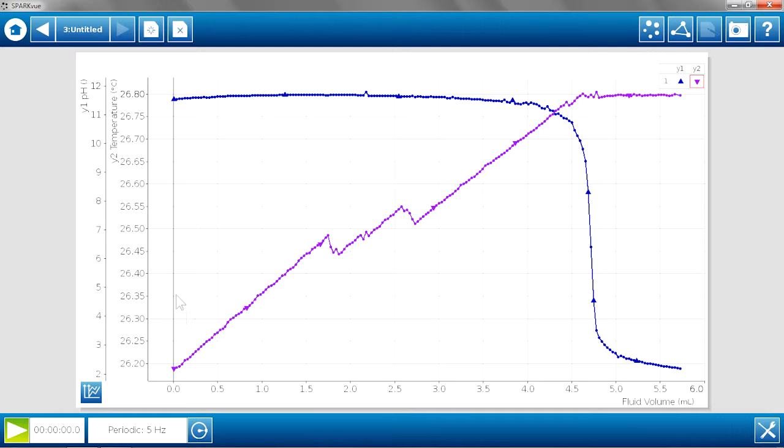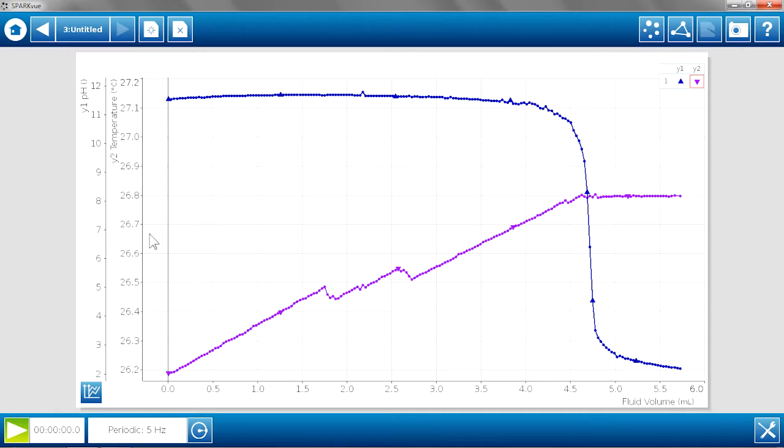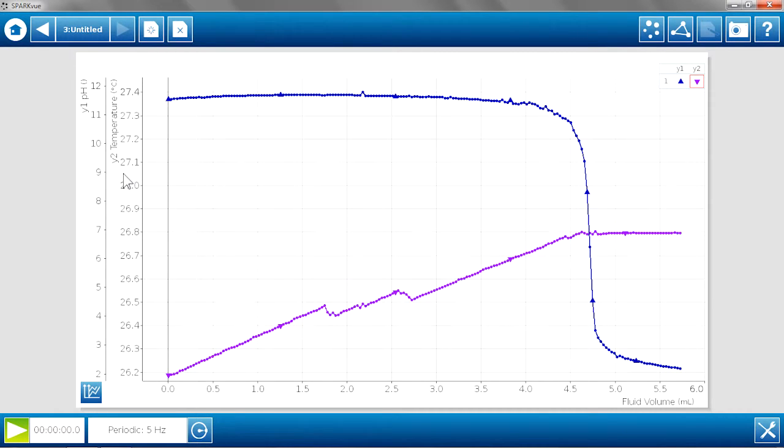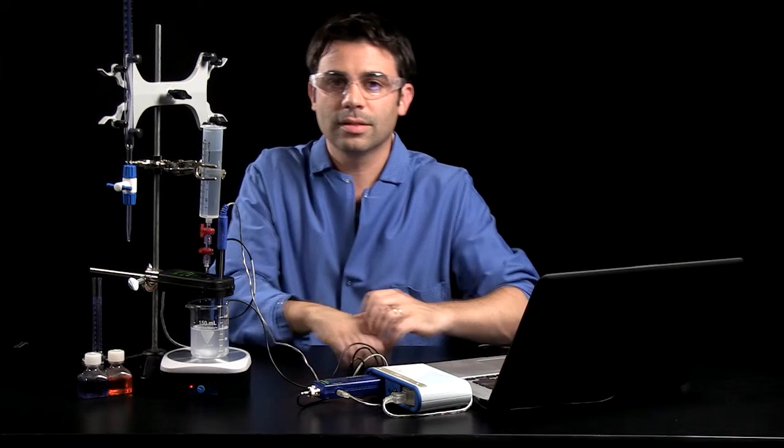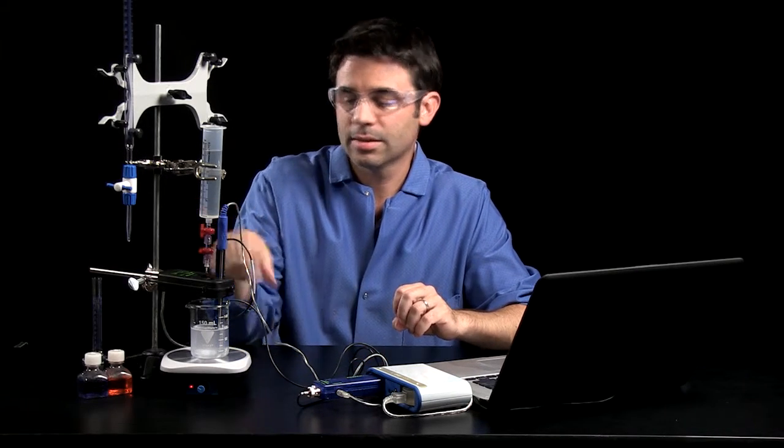And here we have the temperature steadily increasing as the reaction happened. And then once the reaction stopped happening because the equivalence point was reached, then the temperature leveled off, and it would eventually start to cool back down to room temperature. And we can see that that point where the temperature started leveling off is approximately the same point as the pH equivalence point. So we can really get an idea of understanding the system that's happening in the beaker with the reactants and the products.